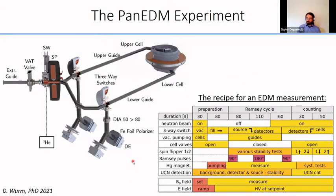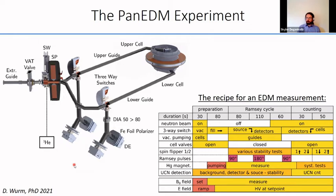The Ramsey experiment takes about 400 seconds, of which 250 seconds are anticipated to be the holding time during which spins coherently evolve in the presence of the electric and magnetic fields. This timing is a non-obvious compromise so that during the Ramsey cycle, the source has a chance to build up a new population of ultra-cold neutrons for the subsequent cycle—a particularity of superfluid-helium-based UCN sources that does not apply in the same way to deuterium-based sources that have been the standard in recent measurements.